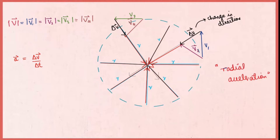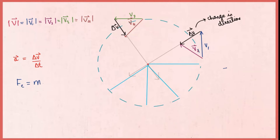According to Newton's second law of motion, force equals mass times acceleration. Similarly, centripetal force equals mass times centripetal acceleration, and the centripetal acceleration is directed radially inward, so the centripetal force is directed radially inward too, along the direction of radial acceleration.